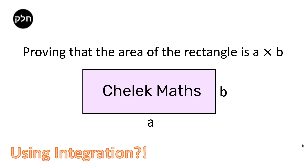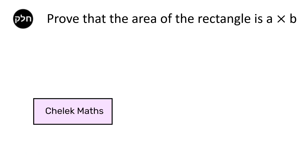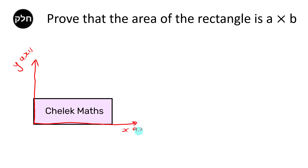We're going to be proving that the area of the rectangle is A times B. So, prove that the area of the rectangle is A times B. We have this rectangle down here, and what we're going to do is imagine that it's actually on a coordinate plane. This is the y-axis and this is the x-axis. Now, if we're going to call this length A and this length B, what do the coordinates have to be of the corners of this rectangle?